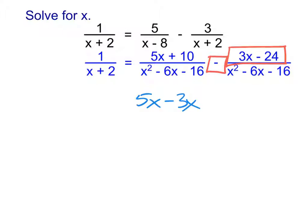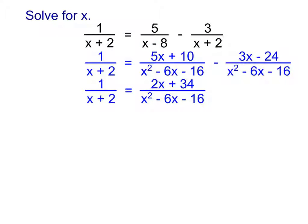Once we have the common denominator, be careful when you do this subtraction — you could end up with an error that's a pain to fix. Notice I am subtracting everything over here. When combining like terms on the top, I'm going to have to do 5x minus 3x — we're usually pretty good about that part. But we're also going to have to do 10 minus a negative 24, so really you're doing 10 plus 34 when you combine on the top. Once we're here with a fraction equal to a fraction, you can cross-multiply.